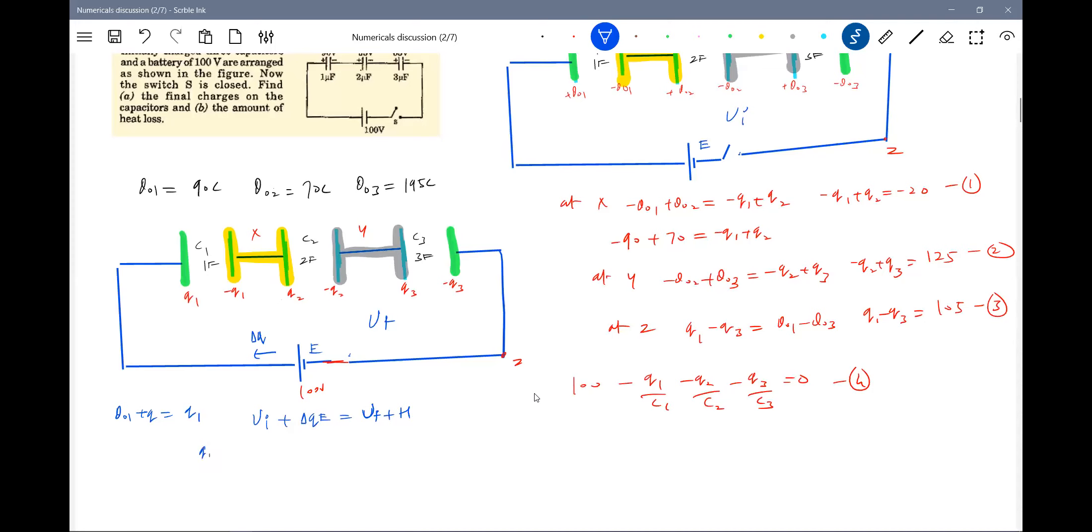So initial values. So will be Q naught 1 square by 2C1, Q naught 2 square by 2C2. Plus work done by the cell equal to this will be Q1 square by 2C1, Q2 square by 2C2.